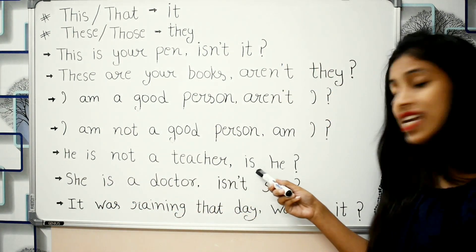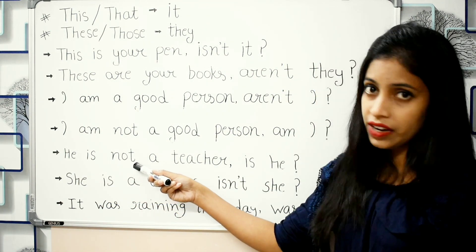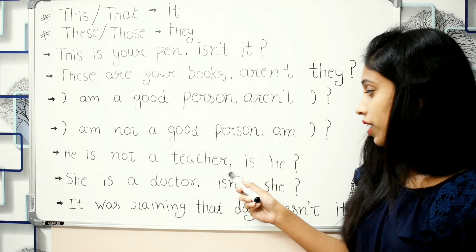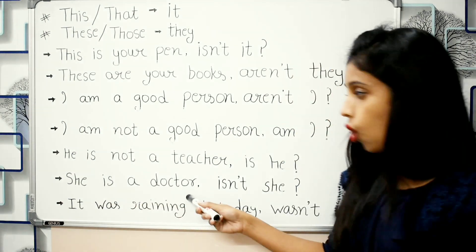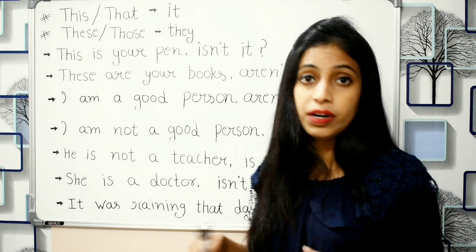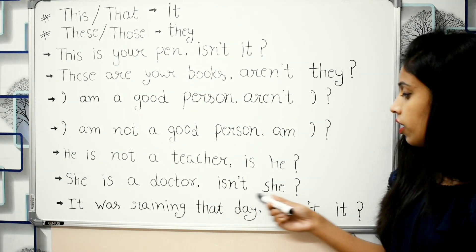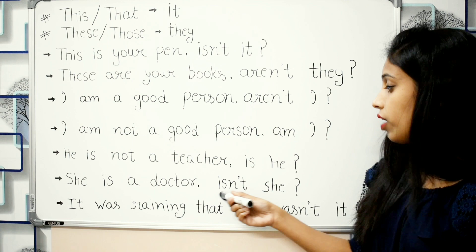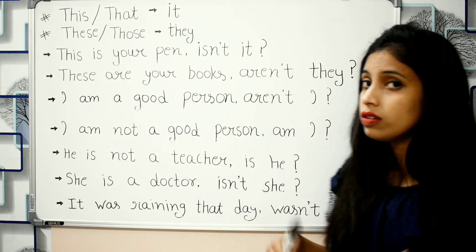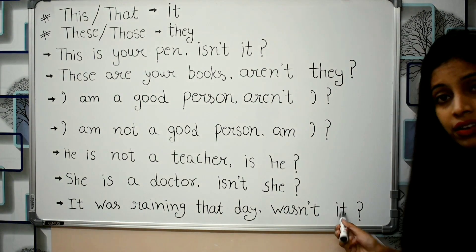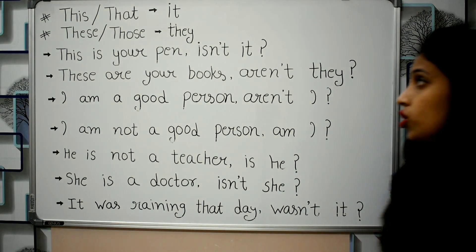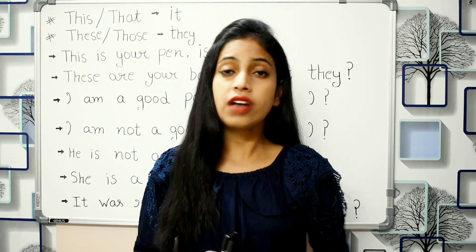For example: 'He is not a teacher, is he?' — negative statement, positive tag 'is he'. And: 'She is a doctor, isn't she?' — positive statement, negative tag 'isn't she'. For past tense: 'It was raining that day, wasn't it?' — positive statement, so the negative tag 'wasn't it' is used.